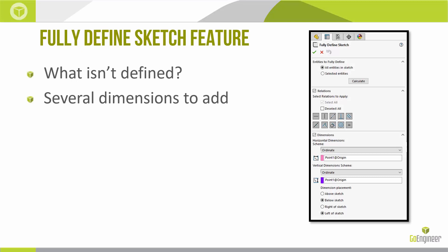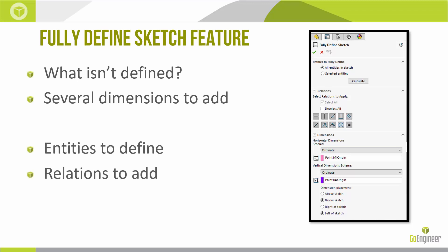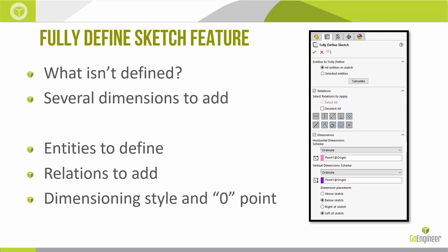Here's a look at the Property Manager for Fully Defined Sketch. First, we define what entities we're trying to lock down — we don't have to do all of them, we can select specifically. Then we choose what relations are valid. You don't have to check all of these; if some lines are close to horizontal but we know they're at an angle because of our design intent, we can uncheck those boxes and prevent them from being erroneously added. Lastly, we choose a dimensioning style and a zero point — where these dimensions are springing from.